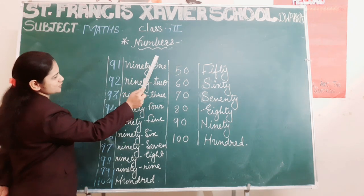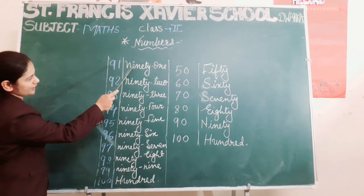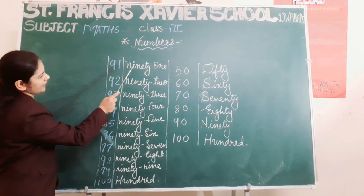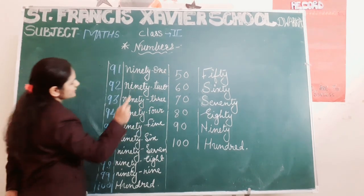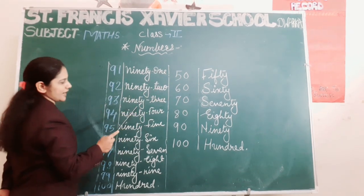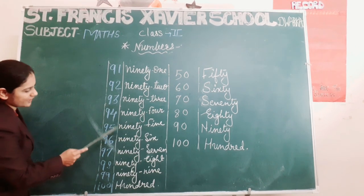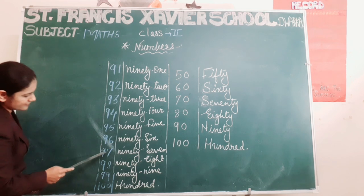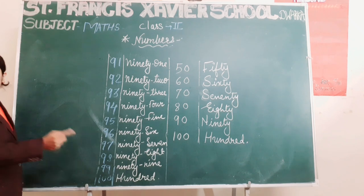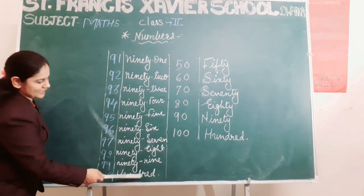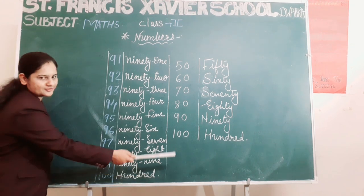As you had learned the spelling from 1 to 9, you just have to learn the spelling of 90 — N-I-N-E-T-Y, 90. Like this: 91, 92, 93, 94, 95, 96, 97, 98, 99, and 100: H-U-N-D-R-E-D, 100.